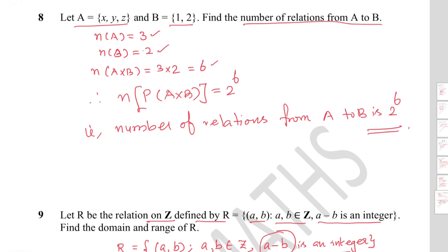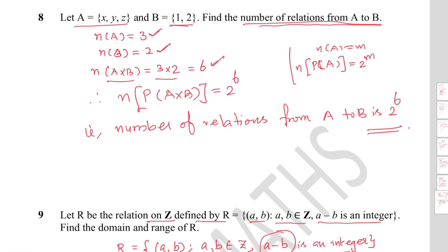Question 8: A = {x, y, z} and B = {1, 2}. Find the number of relations from A to B. n(A) = 3 and n(B) = 2, so n(A × B) = 3 × 2 = 6. The number of relations equals the number of subsets of A × B, which is given by 2^n(A×B) = 2^6 = 64. Therefore the number of relations from A to B is 64.